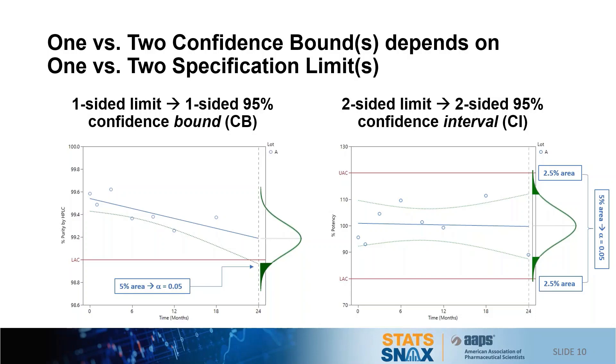So using a one-sided bound for a one-sided acceptance criterion ensures the longest possible dating period because I've correctly allocated the error to the right tail of the distribution.